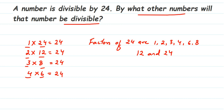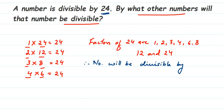The number will be divisible by all the factors of 24. Since 24 is already given in the question, apart from 24 we write down: 1, 2, 3, 4, 6, 8, and 12. Therefore, the number divisible by 24 will also be divisible by 1, 2, 3, 4, 6, 8, and 12. I hope this question is clear — thank you for watching.